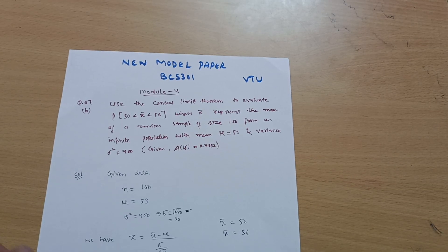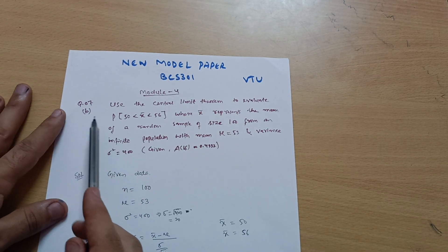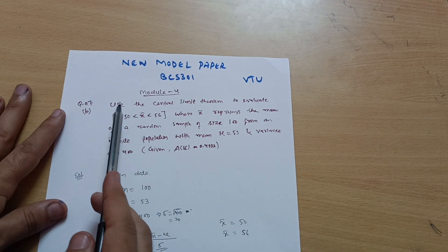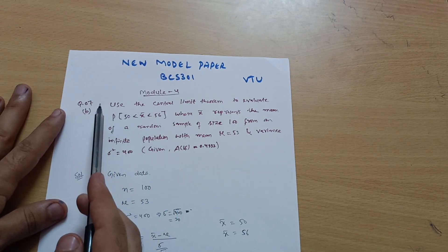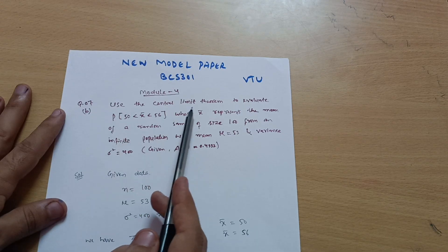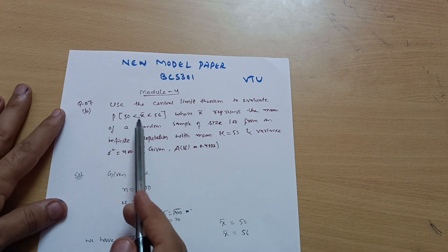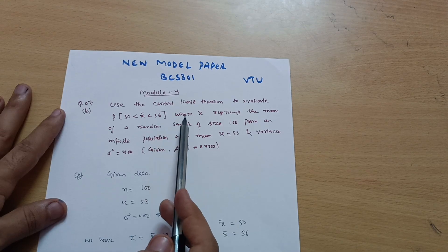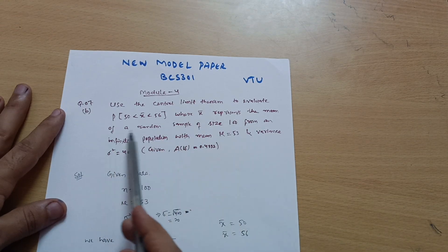Dear friends, welcome back to another lecture. Hope you are all doing well. We are discussing the model question paper. In this video, I will explain question number 7b: use the central limit theorem to evaluate P(X̄ > 50 < 56) where X̄ represents the mean of a random sample of size 100 from an infinite population.